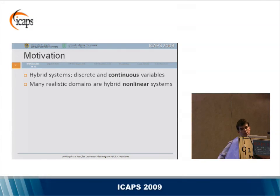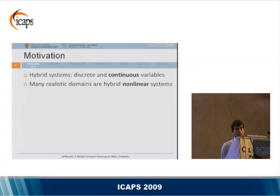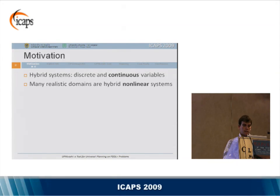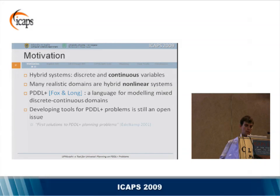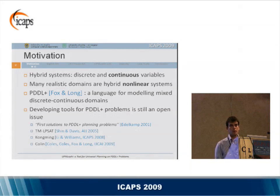About motivation: as discussed this morning, it is common to have systems subject to both discrete and continuous behaviors. Such systems are hybrid systems where discrete and continuous variables are involved. Moreover, many realistic domains have a nonlinear dynamics, so hybrid systems with complex nonlinear dynamics represent the context we are interested in. The PDDL+ language allows the modeling of such systems and some interesting steps have been done in solving PDDL+ problems. However, developing more tools for PDDL+ problems is still an open issue.